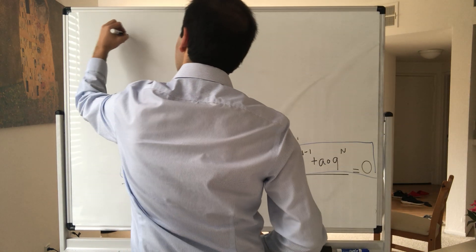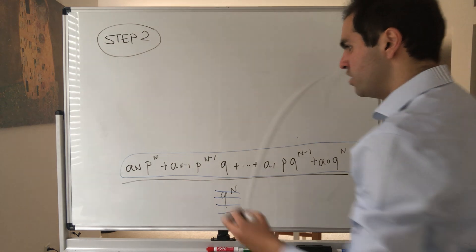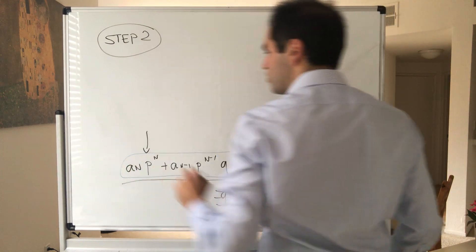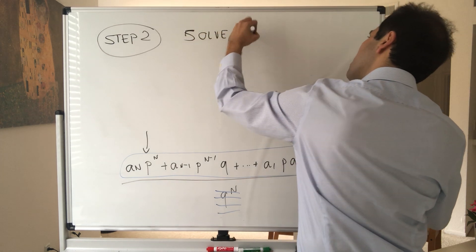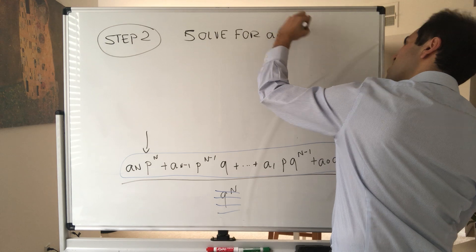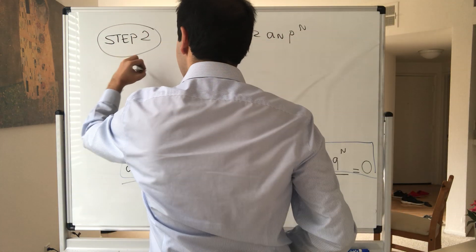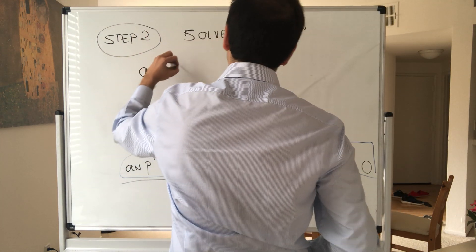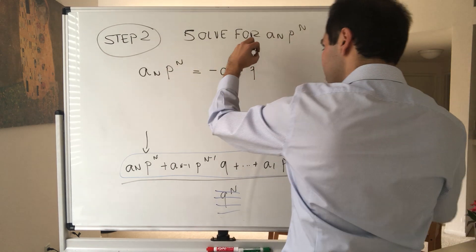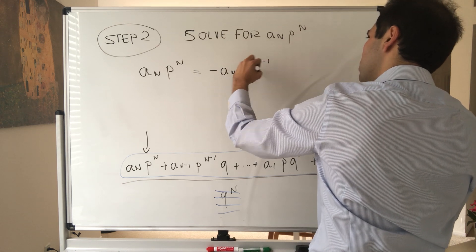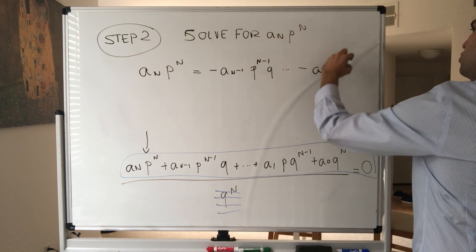In the first step it doesn't matter which way you do it, but in this step we want to solve for a_n p^n. In other words, put all the other terms on the right-hand side. So what we get is a_n p^n becomes minus a_(n-1) p^(n-1) q dot dot dot minus a_0 q^n.